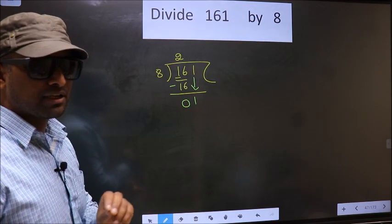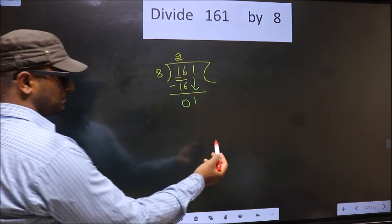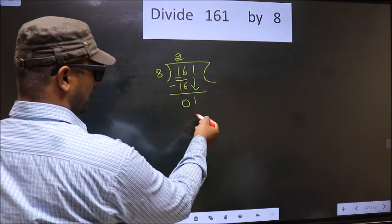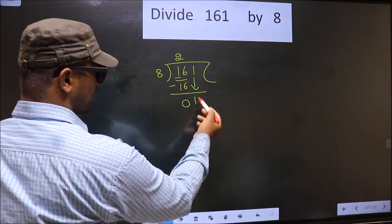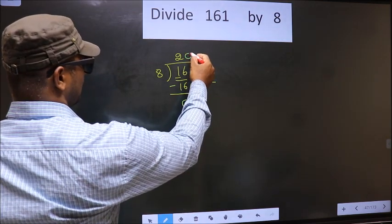Instead, what you should think of is what number should we write here. If we write 8 here, that is larger than 1. So what we do is we take 0 here.